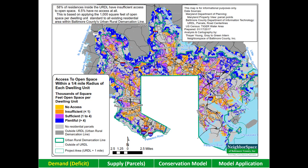Most of you are familiar with this map, which shows the need for open space inside the ERDL. The yellow and orange areas have the least access to open space within one-quarter mile from someone's home, or about a five-minute walk. 65% of households inside the ERDL have insufficient or no access to open space under this standard, which is a result of applying the county's open space standard of at least 1,000 square feet per dwelling unit.